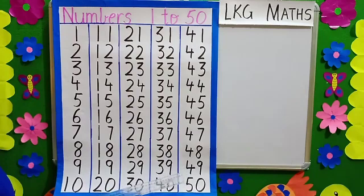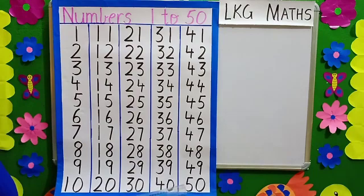What comes after 49, children? Yes! 5, 0 — 50.